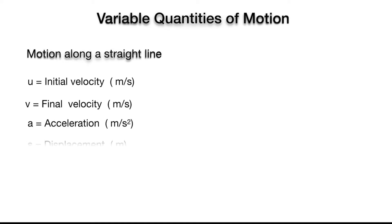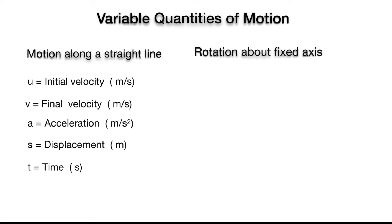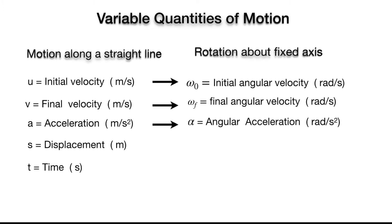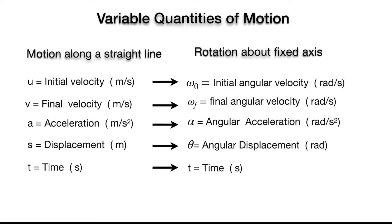Now let's check out the different variable quantities related to these motions. In case of motion along a straight line, the equations of motion have five variables: initial velocity, final velocity, acceleration, displacement, and time. Similarly, in rotational motion about a fixed axis, there are five variable quantities: initial angular velocity omega_0 (measured in radians per second), final angular velocity, angular acceleration (in radians per second squared), angular displacement theta (in radians), and time t in seconds.